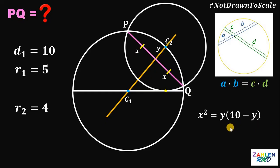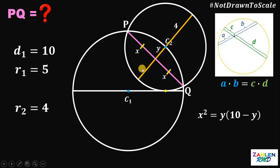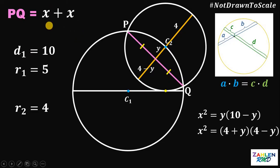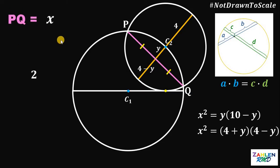Now let's focus on the small circle. Since the radius of the small circle is 4 and this segment is y, the remaining segment is 4 minus y. Using the Chord-Chord Power Theorem, x squared equals (4 plus y) times (4 minus y). Our goal is to find segment PQ, which equals x plus x, or 2x.